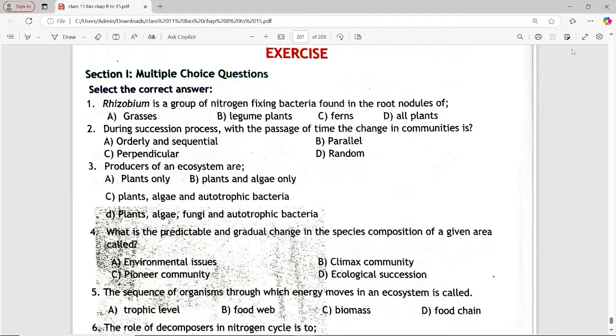So, let's start. First question is, rhizobium is a group of nitrogen fixing bacteria found in the root nodules of. Options are grasses, legume plants, ferns, all plants. Answer is option b, legume plants.